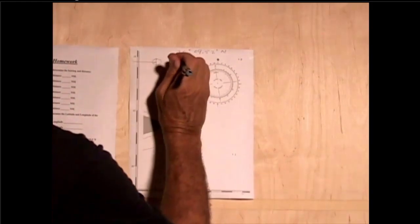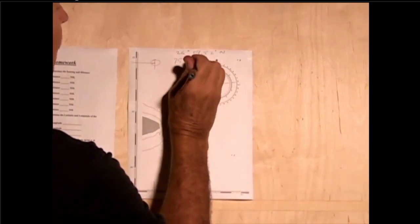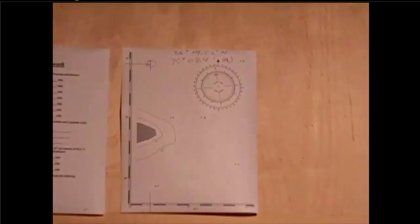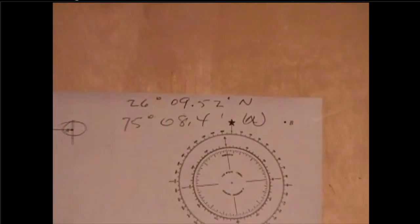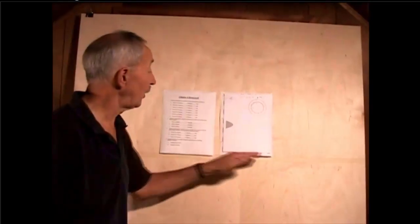So, 75 degrees, 08.4 minutes west. And that's how you would measure latitude and longitude, using these scales.